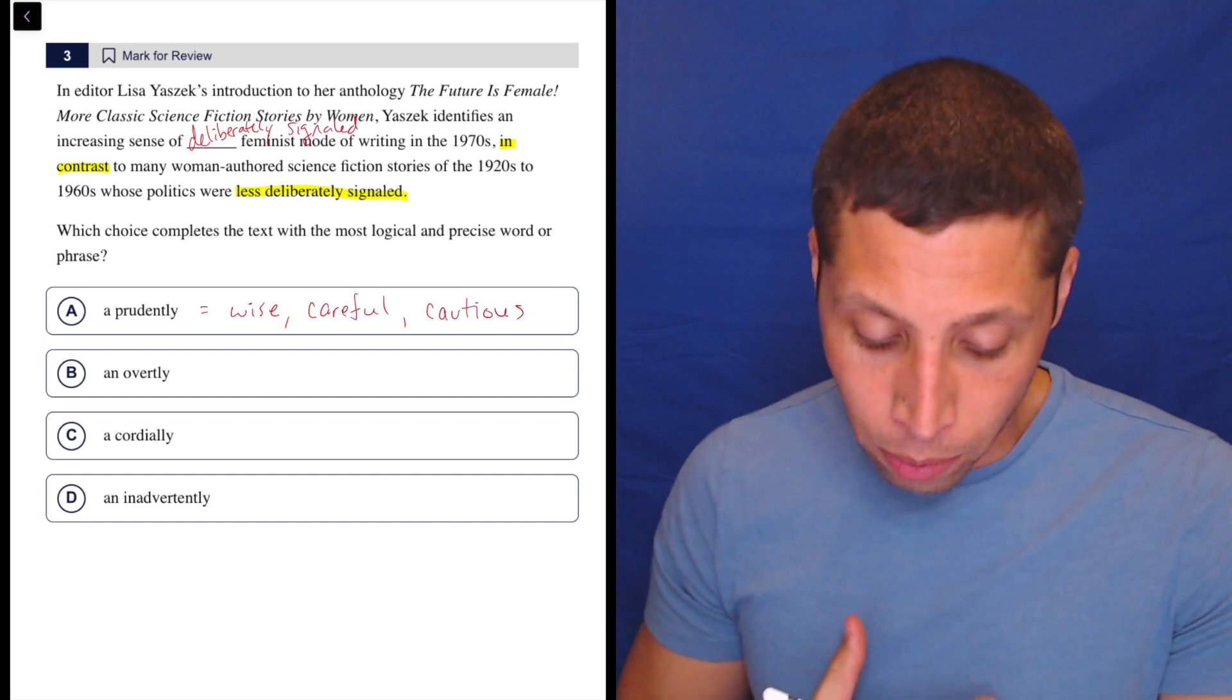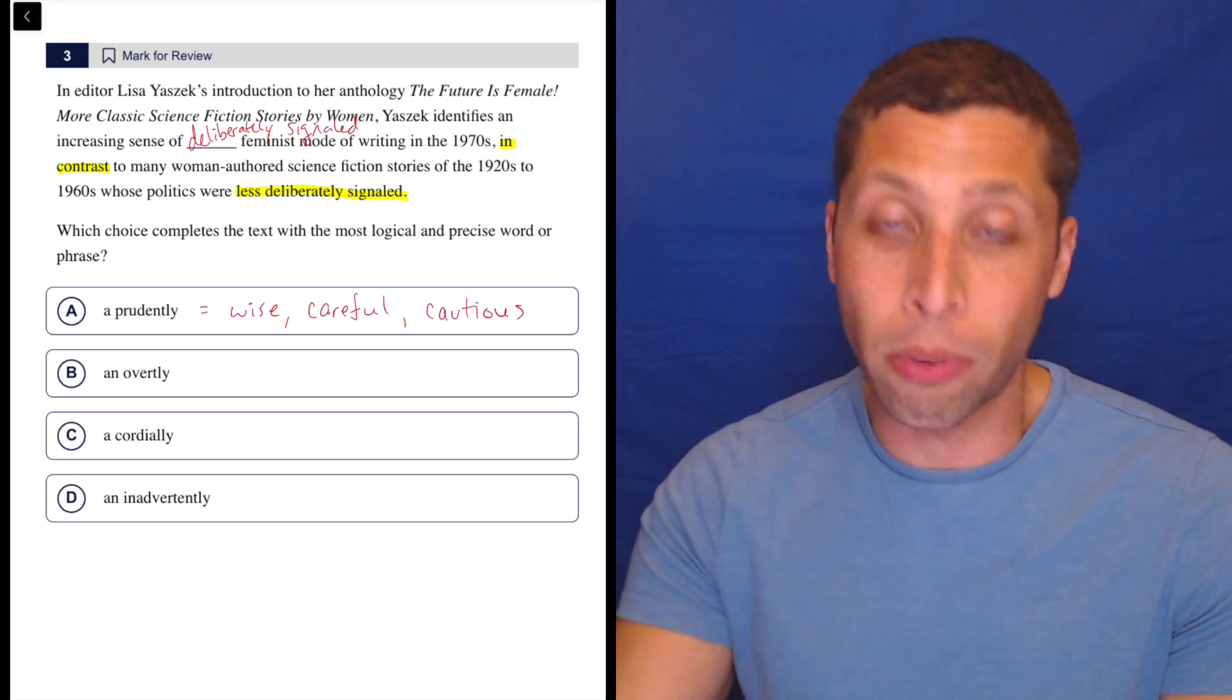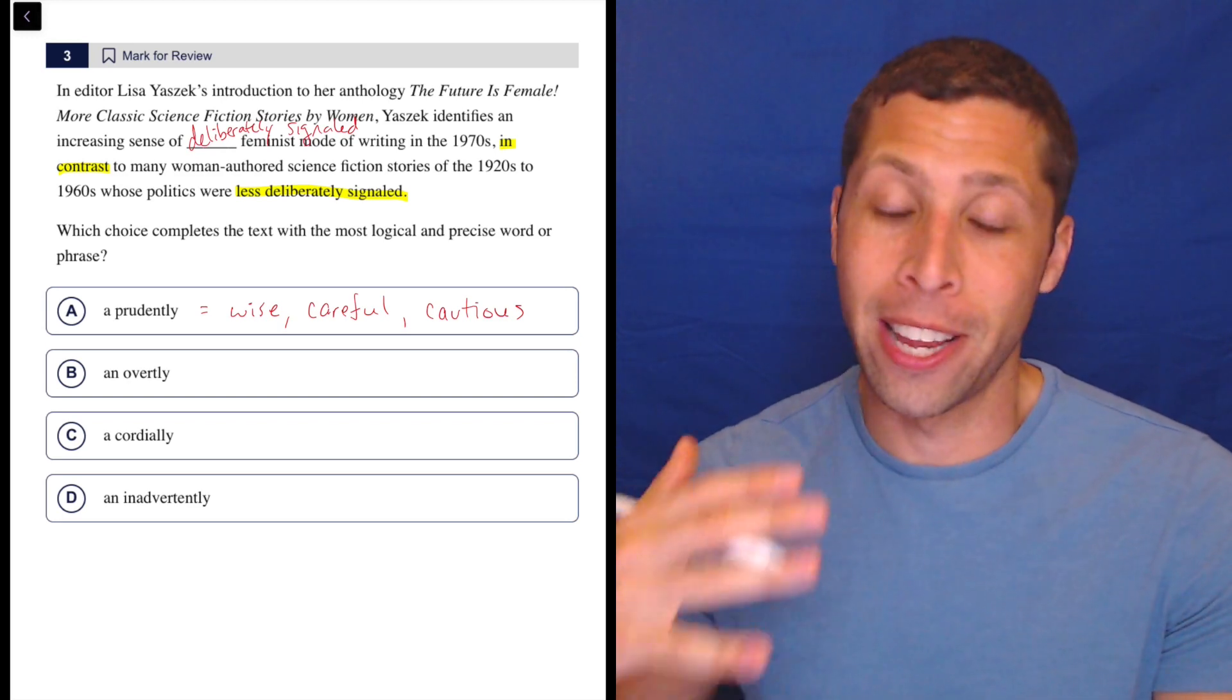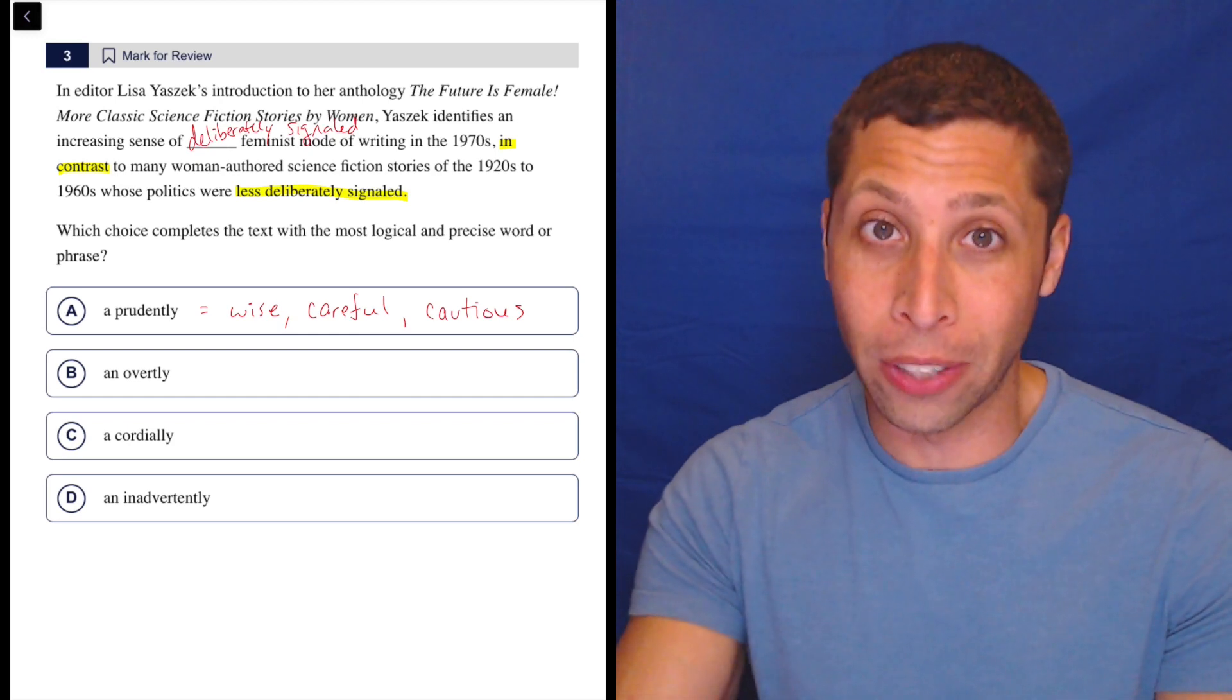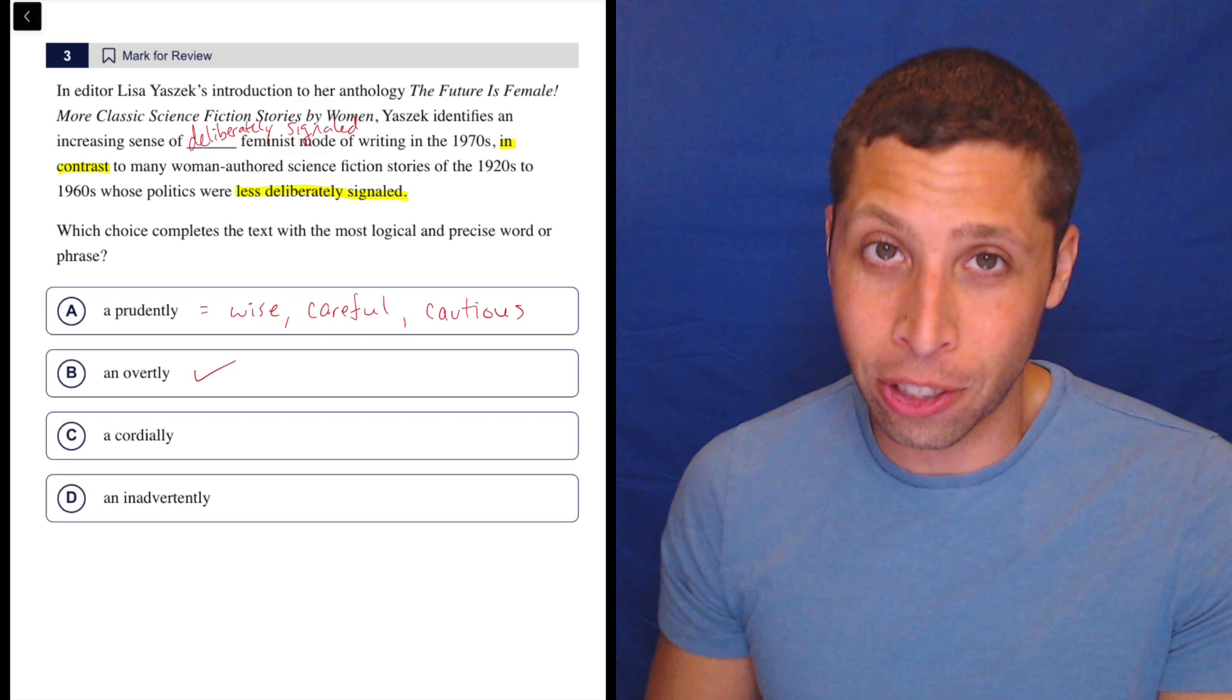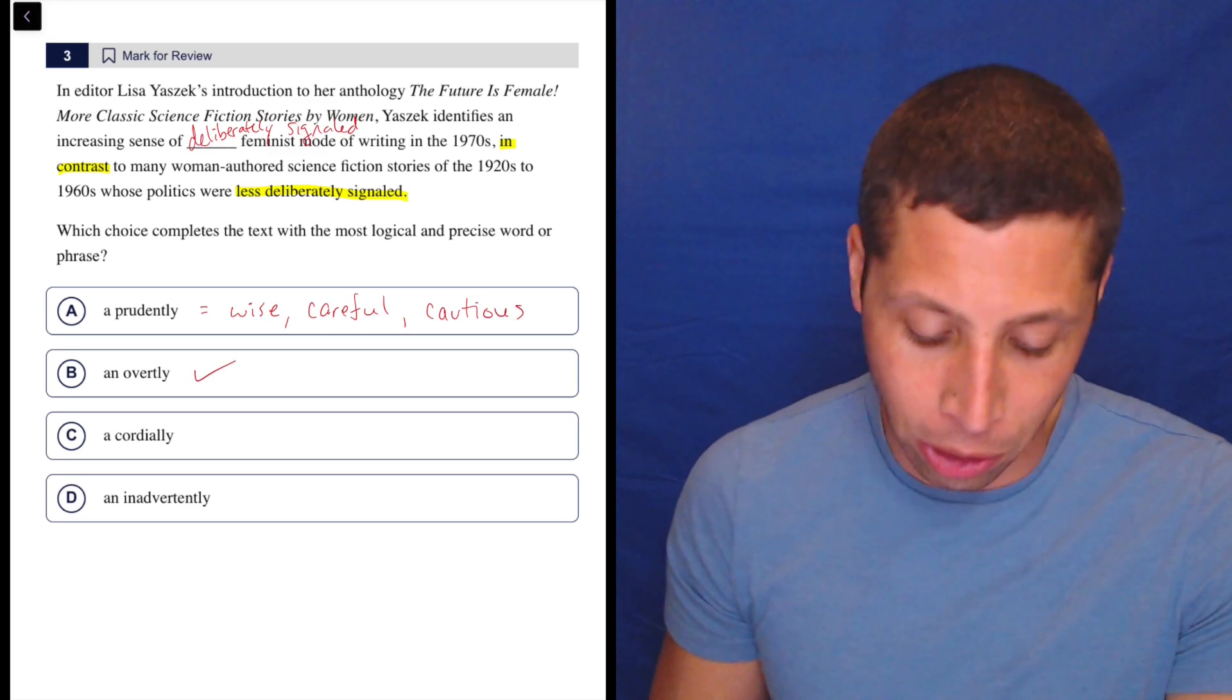Overtly, so an increasing sense of an overtly feminist mode of writing. So if something is overt, it's obvious, it's out there, it is done deliberately and it is done purposefully and to be known. So this is a good fit. This is literally just like the answer here, this is just what this means. But let's look at the other choices so you can learn some things.